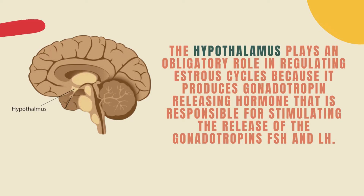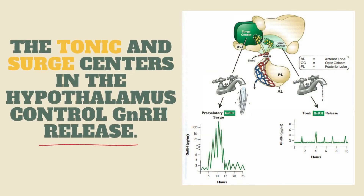Previously, we have seen where GnRH is released from and the stimuli for FSH and LH release. Thus, the hypothalamus plays an obligatory role in regulating the estrous cycle because it produces gonadotropin-releasing hormone that is responsible for stimulating the release of the gonadotropins FSH and LH. The tonic and surge centers in the hypothalamus control GnRH release.